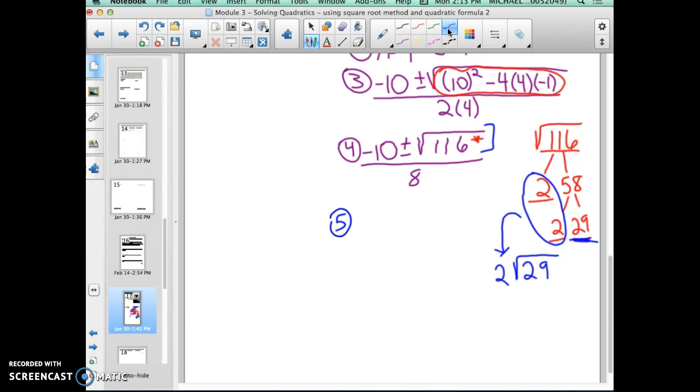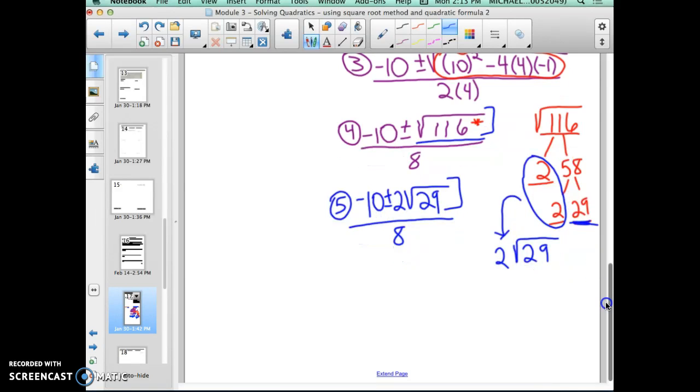So in step 5, I rewrite everything again. Negative 10 plus or minus, sorry, I forgot my 2. Negative 10 plus or minus 2 times the square root of 29 all over 8. Again, so the big difference here was that the square root of 116 was not a perfect square, so I had to simplify it into 2 radical 29, and that's how I write it. The number first and the radical after that.